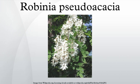Stamens: 10, inserted with the petals, diadelphous; 9 inferior, united into a tube which is cleft on the upper side; superior 1 free at the base. Anthers 2-celled, cells opening longitudinally. Pistil: ovary superior, linear oblong, stipitate, 1-celled. Style inflexed, long, slender, bearded. Stigma capitate. Ovules several, two-ranked.